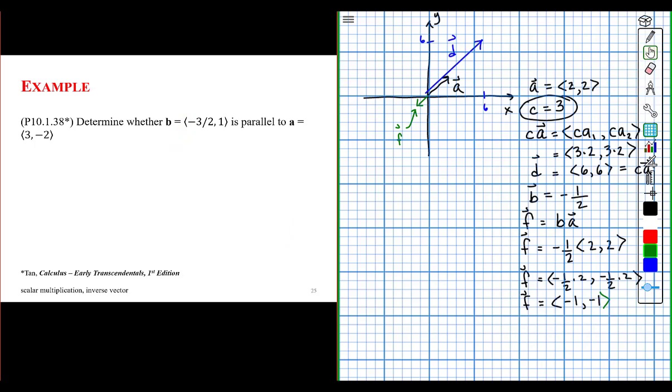So let's do an example. Determine whether vector b, with components minus 3 halves and 1, is parallel to vector a, with components of 3 and minus 2. Take a couple of minutes to answer this question by pausing the video. And once you answer the question, you can find the link in which I solve this problem.